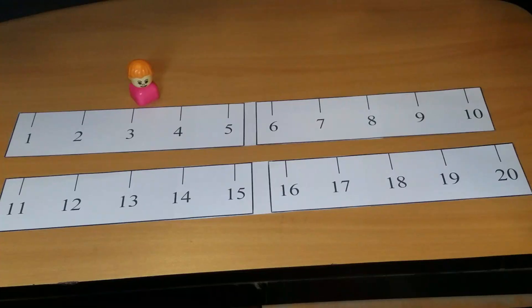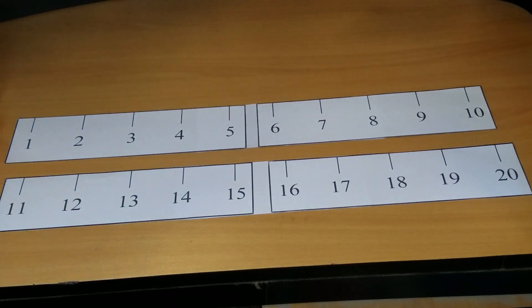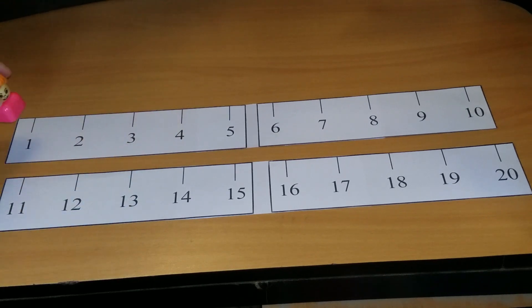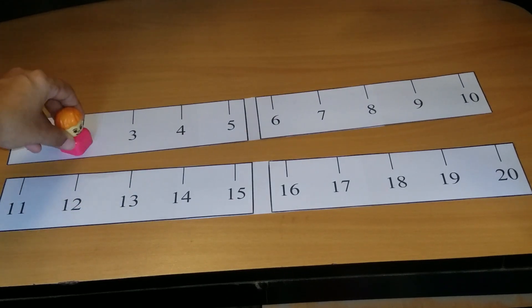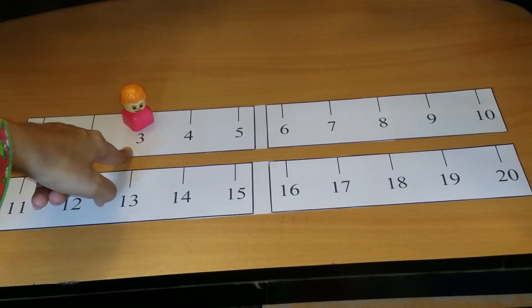Twelve, skip the thirteen, fourteen, skip fifteen, sixteen, skip seventeen, eighteen, skip nineteen, twenty. So this was the skip counting of twos. If you will ask your child to skip counting of threes, how you're going to do that? Now if you want your child to learn how to skip count by threes, it's in the same way: put the toy here and ask your child to skip two numbers and jump on the third.